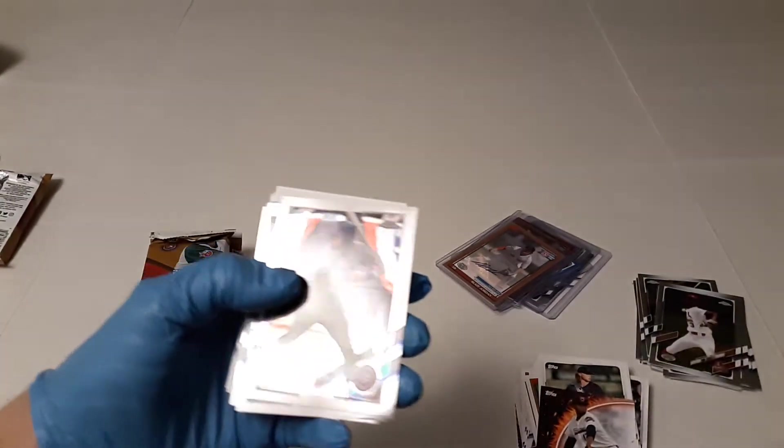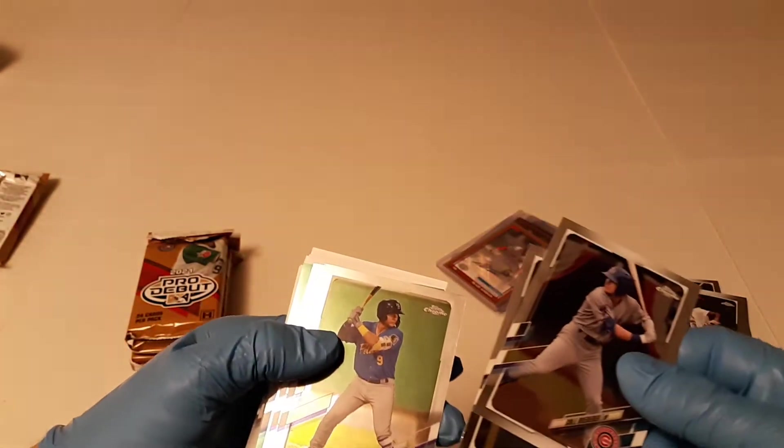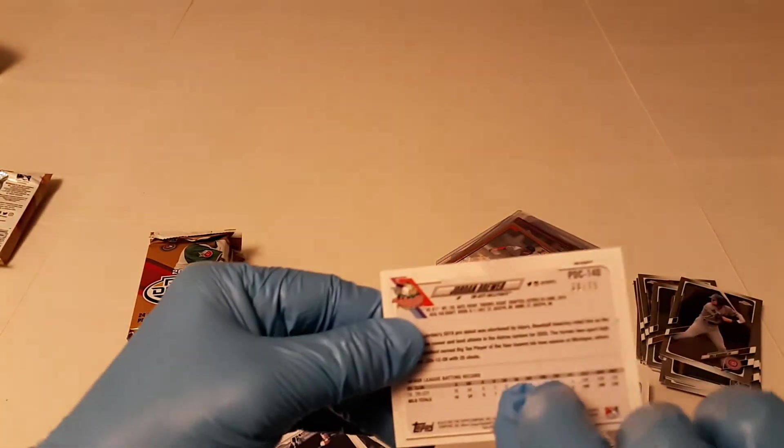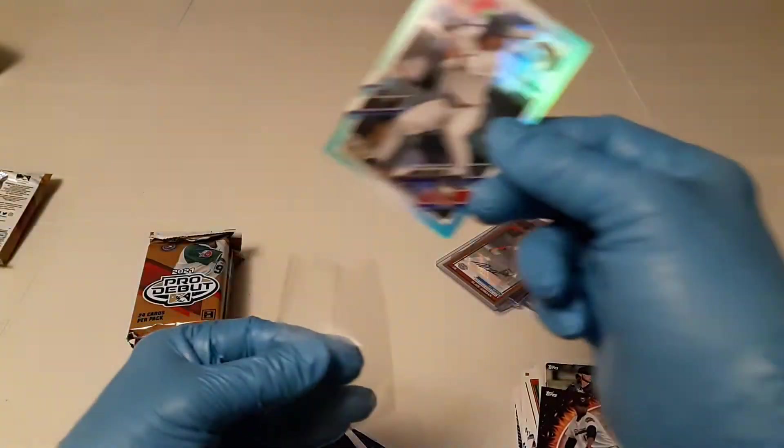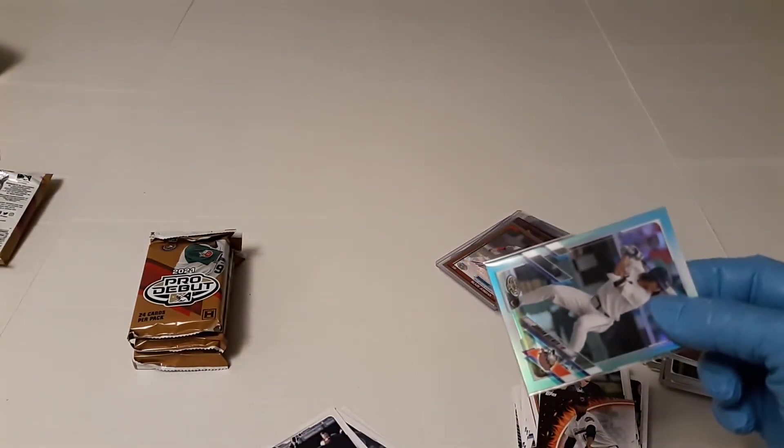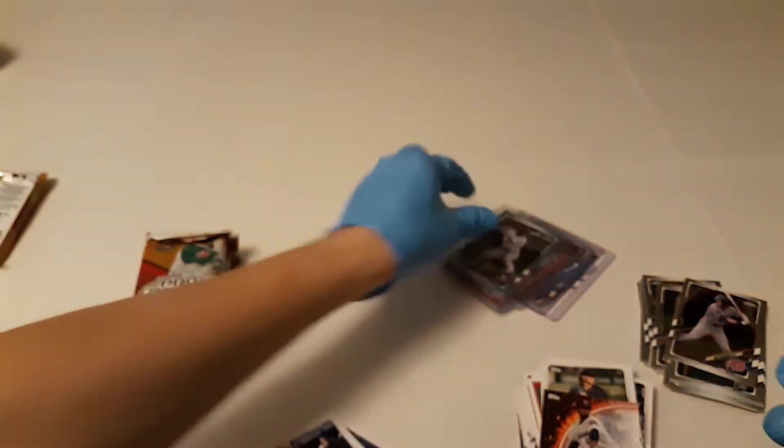Crazy. I got a teal or aqua coming. Cole Roterer, Mario Feliciano, Miguel Amaya, Spencer Strider, Austin Martin, and Jordan Brewer is your aqua and that's numbered 38 of 75. So wow. Crazy. This is a crazy box. Keep this up. I won't be buying cases anymore. I'll just buy single boxes. I tend to be doing better on them lately.